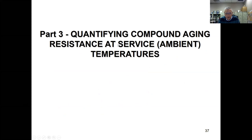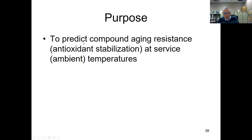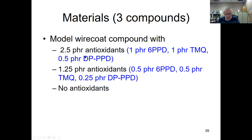Part three: What is the effect of antioxidant loading on service life prediction? We want to predict the aging resistance and antioxidant stabilization at ambient temperatures. We usually do accelerated aging at higher temperatures and assume the rankings are valid at service temperatures. The question is: what's the effect of antioxidant loading on service life or aging at ambient temperatures?